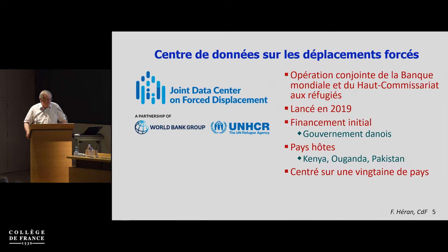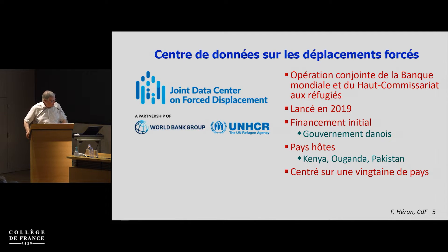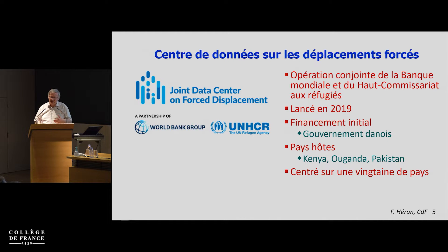Now let's look at the institutions which are supposed to gather data about forced displacement. One of them is a joint data center on forced displacement, recently created by the World Bank Group and the UNHCR. It has been launched in Copenhagen and financed by the Danish government. There are delegations in some countries in the Global South, and it is centered on 20 most vulnerable countries, in order to facilitate surveys on the vulnerability of people vis-à-vis climate variability.